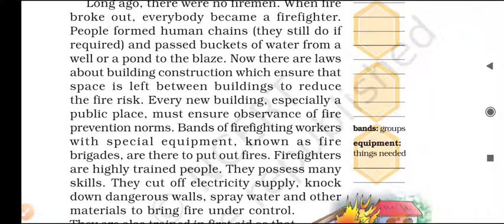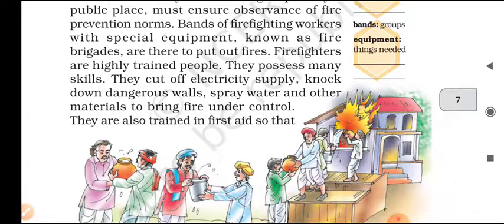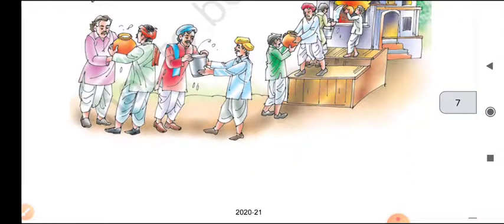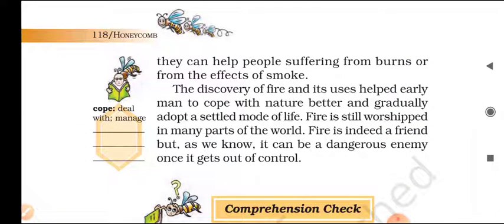Every new building, especially a public place, must ensure observance of fire prevention norms. Bands of firefighting workers with special equipment, known as fire brigades, are there to put out fires. Firefighters are highly trained people — they possess many skills. They cut off electricity supply, knock down dangerous walls, spray water and other materials to bring fire under control. They are also trained in first aid so that they can help people suffering from burns or from the effects of smoke.